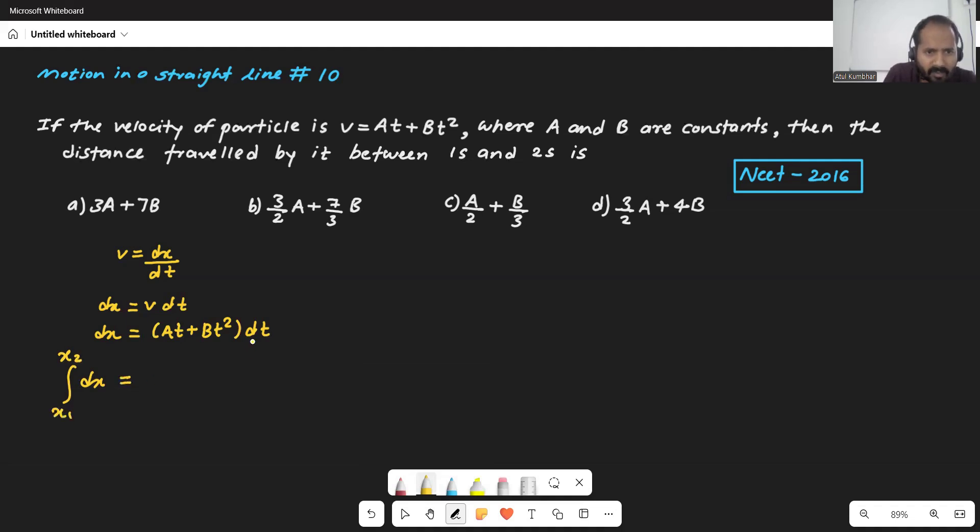So just take an integration of that dx like between distance x₂ to x₁. And then for the function of time, we will take the integration as they have given the limit between 1 second and 2 seconds. So between 2 to 1.